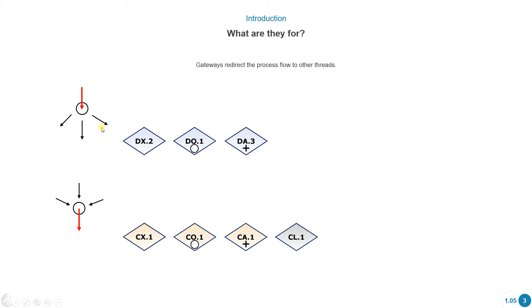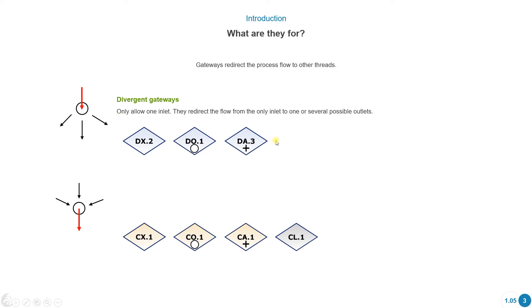There's two different types of gateways. We have the divergent gateways. They allow only one inlet and they redirect the flow from their only inlet into several different possible outlets.